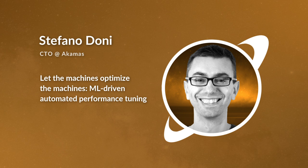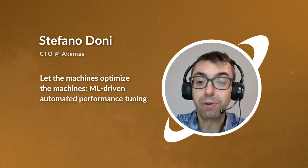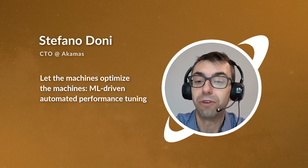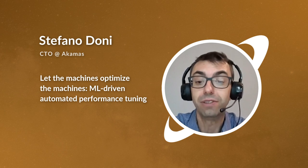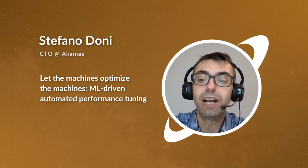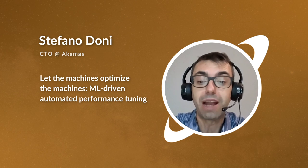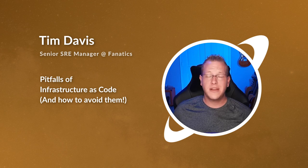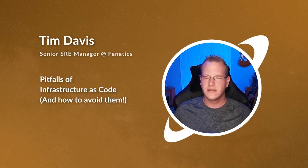Stefano Doni, CEO of Acamas, is here to tell you why you should let machines optimize the machines. Do you want to learn about a new approach based on machine learning techniques that makes it possible to automatically tune system configurations, allowing SRE teams to ensure service performance, efficiency, and reliability while reducing toil? I'll show you how this new machine learning based approach works by optimizing a microservice application running on Kubernetes. 'Pitfalls of infrastructure as code and how to avoid them' — Tim Davis, DevOps Advocate at Envo — is useful for anyone new to infrastructure as code or those who've taken the first few steps.